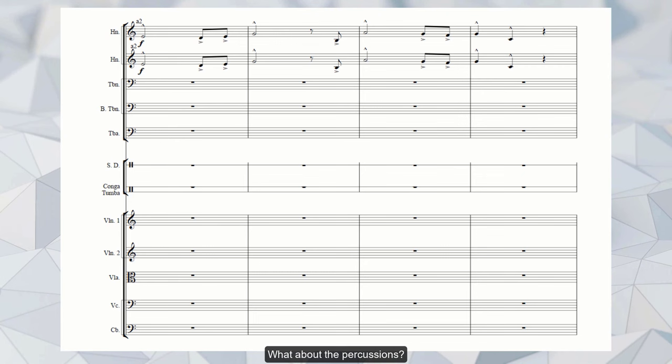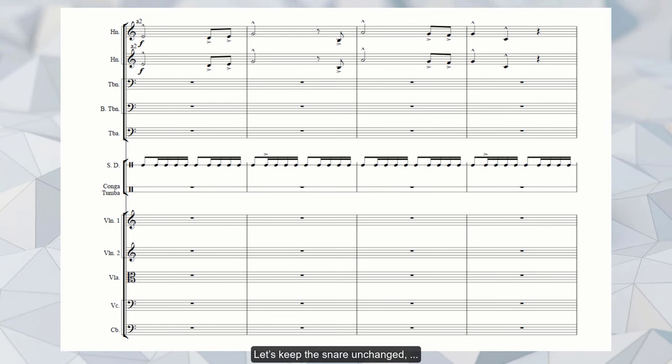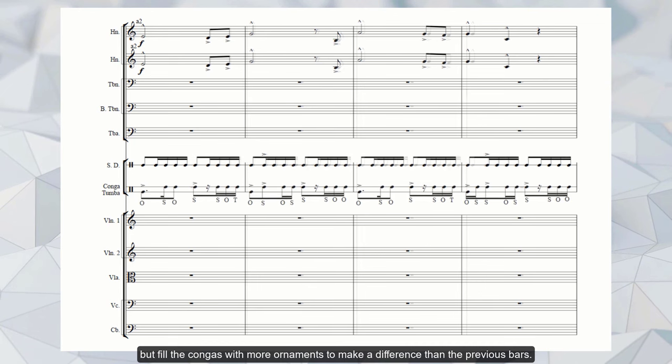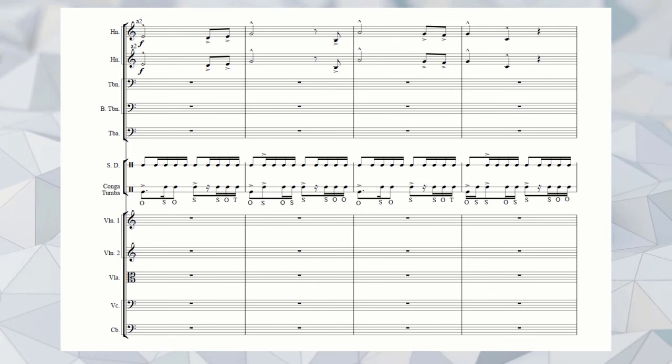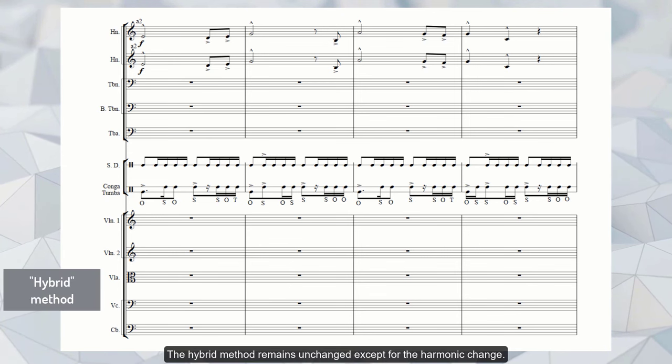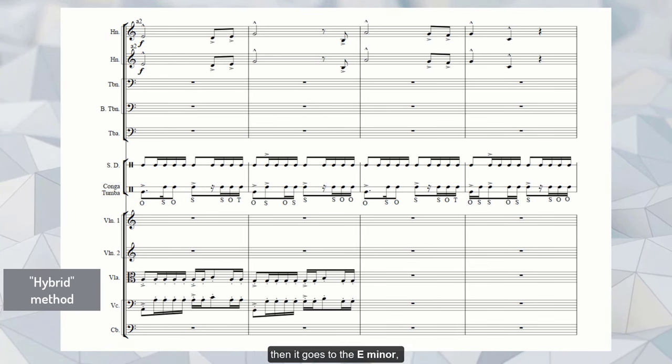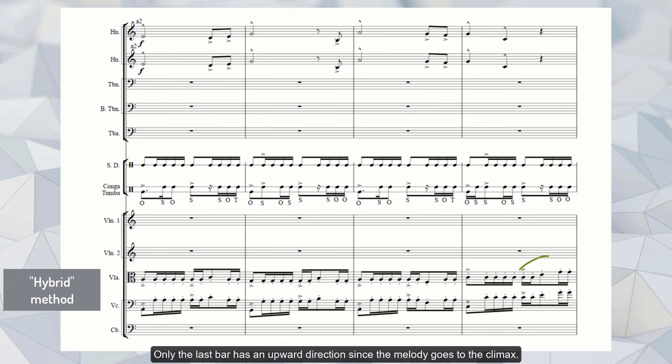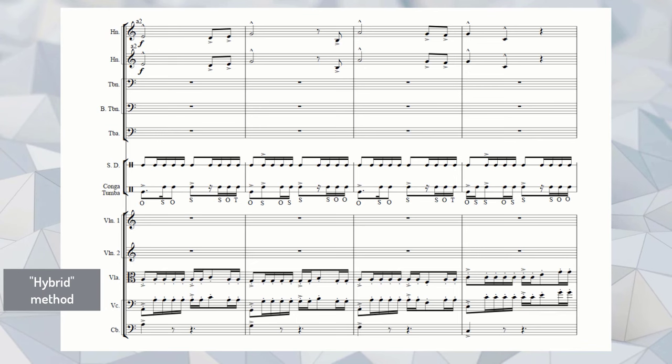What about the percussions? Let's keep the snare unchanged, but fill the congas with more melismas to make a difference than the previous bars. The hybrid method remains unchanged except for the harmonic change. So the first bar is the A minor, then it goes to the E minor, then to the F major. The last bar has an upward direction since the melody goes to the climax.